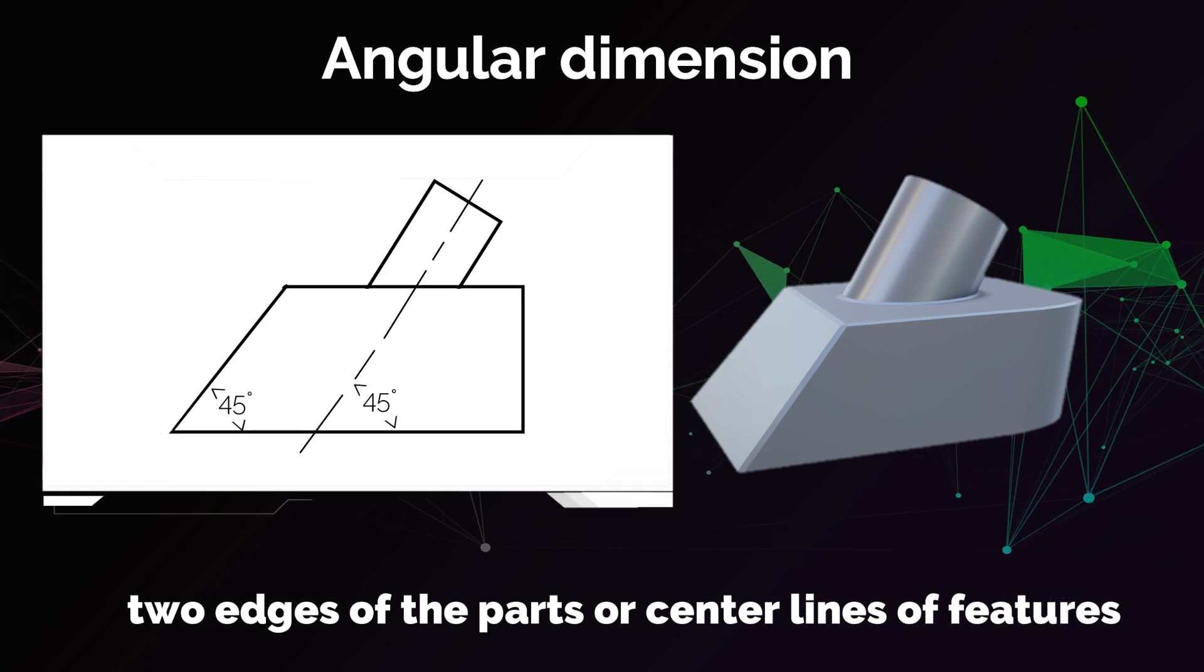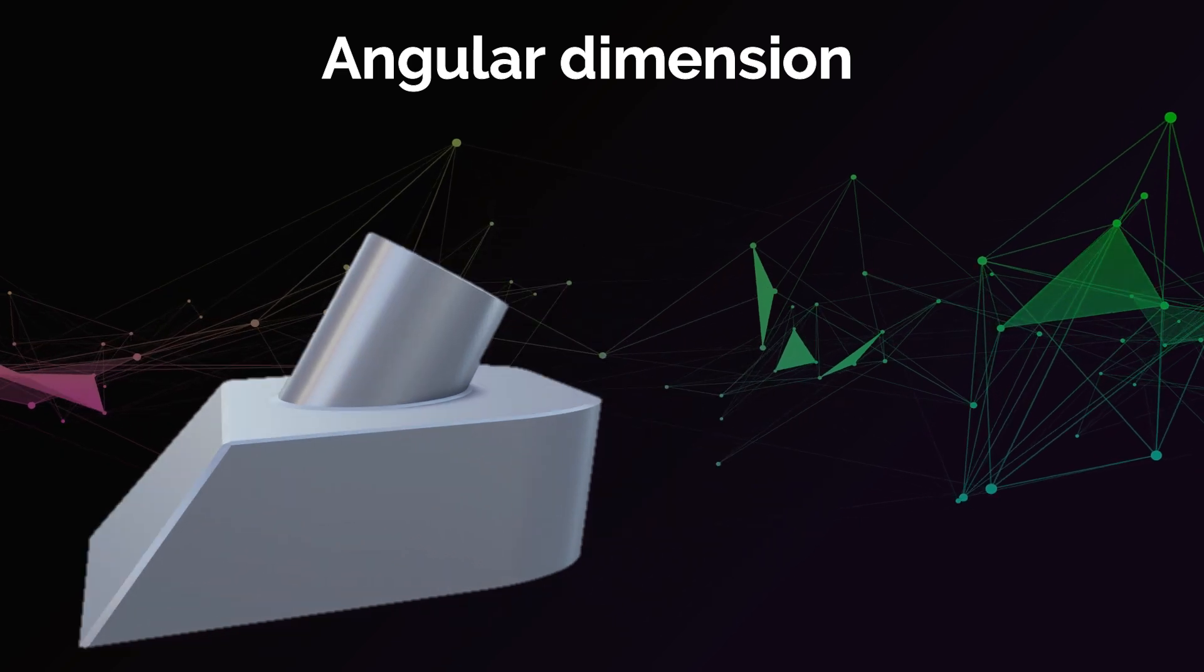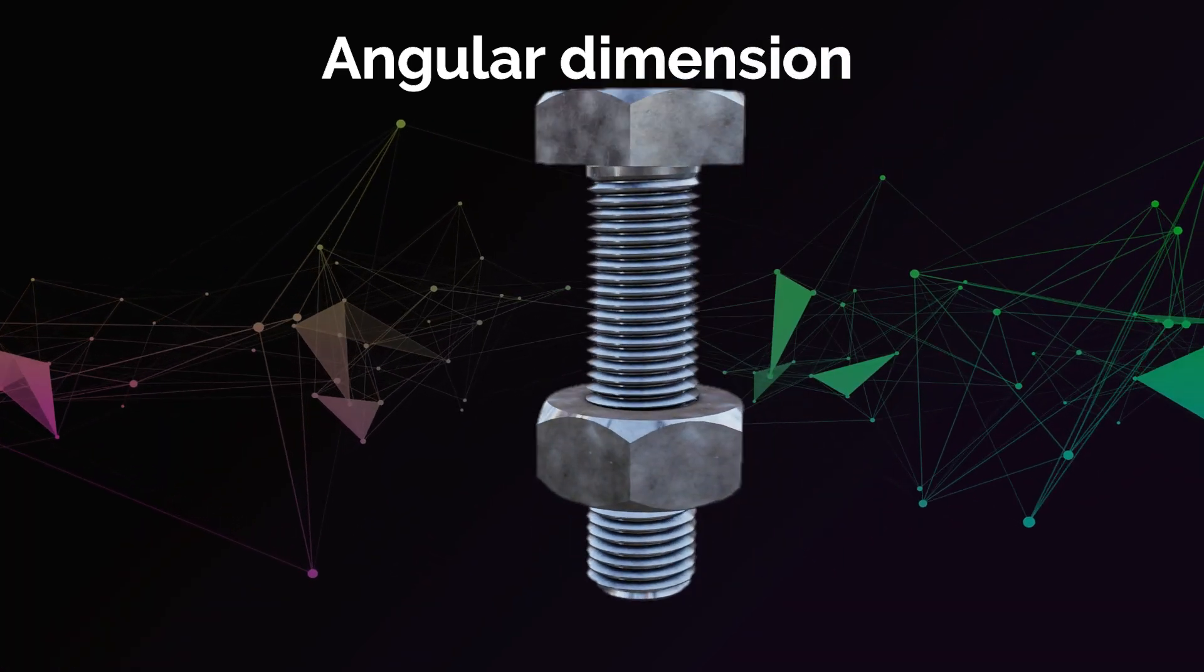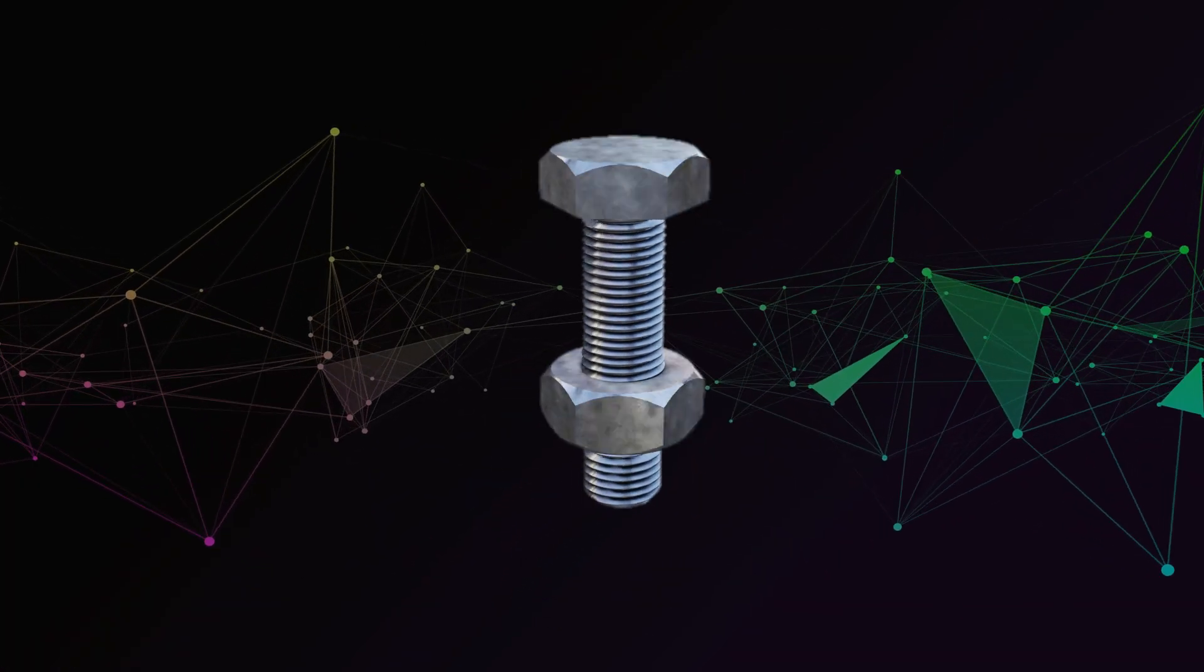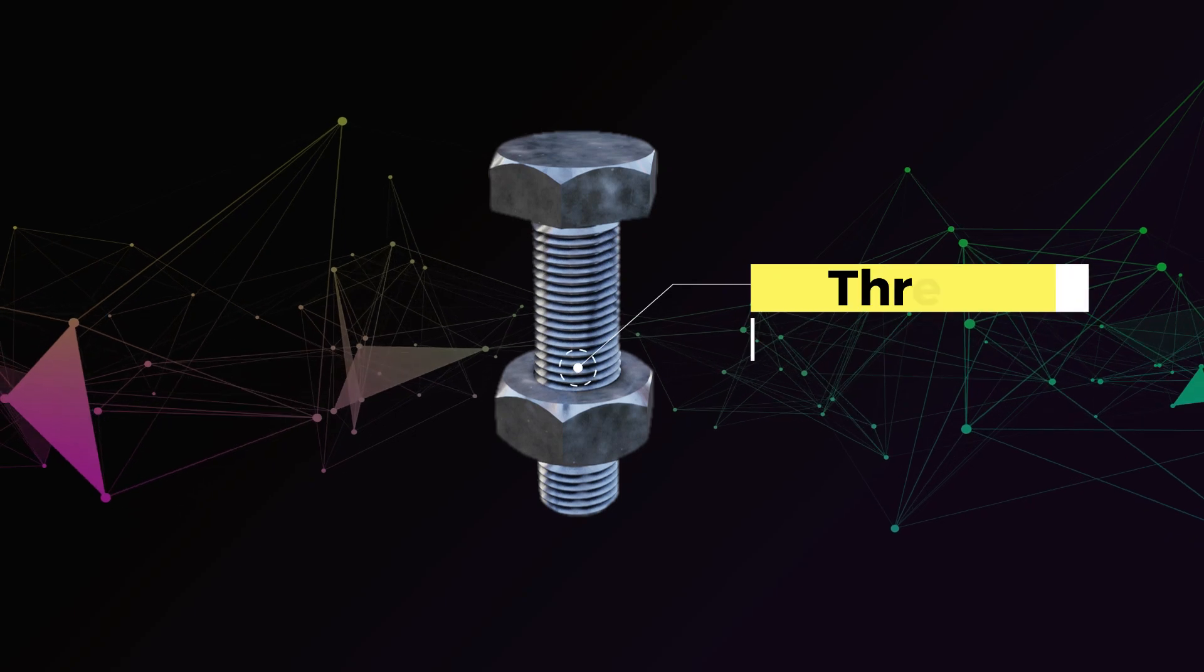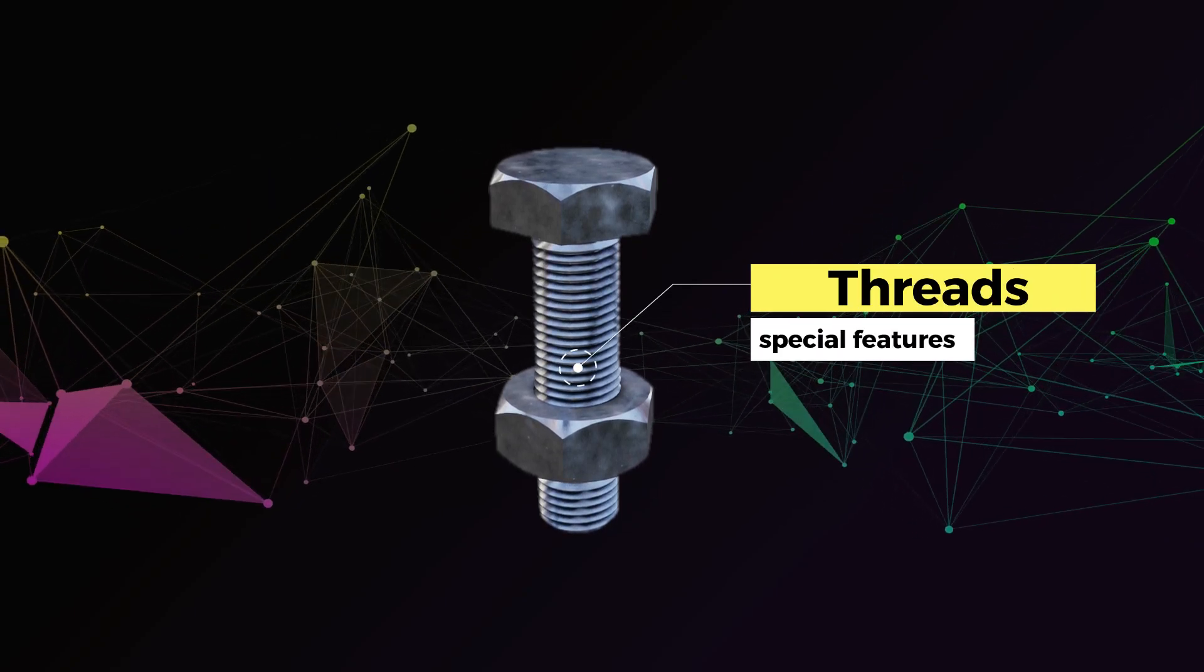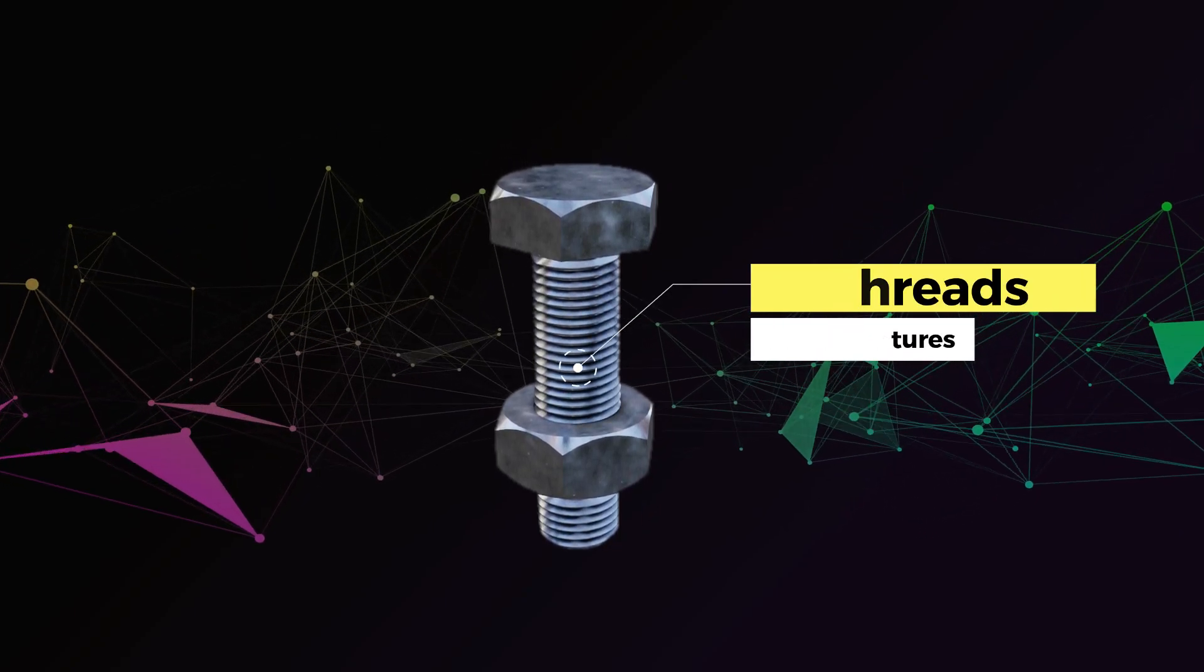Then there are dimensions that are used to describe special features, for example, to describe threads or chamfers. In that case, there is a standard way of describing these features, but we will have a deeper look at these special dimensioning types later on in the course.